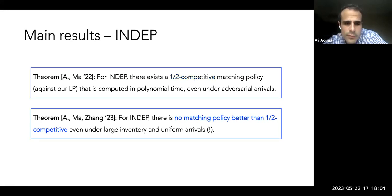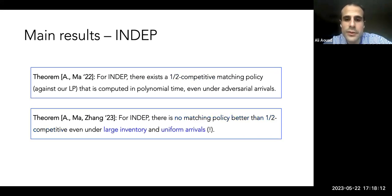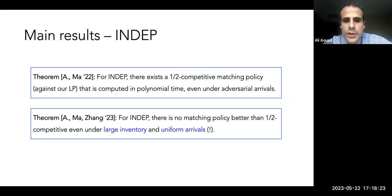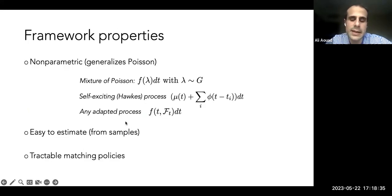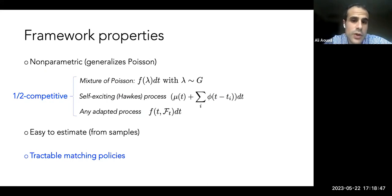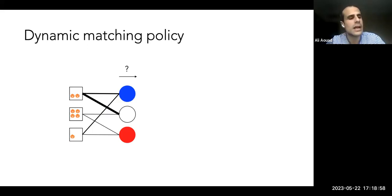Together with Wei Zhong Zhang at Tepper, we recently proved that we cannot improve beyond one-half competitiveness, even under large inventory and uniform arrivals. That's a key difference from the Poisson system — even scaling inventory and assuming uniformly random arrivals doesn't improve beyond one-half. So the performance guarantee we achieve is an optimal worst-case guarantee. Consequently, for mixture of Poisson, Hawkes processes, and adaptive processes where no prior results existed, we now get half-competitiveness.